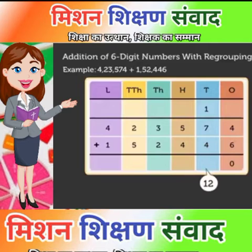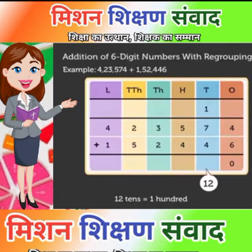Then we add the tens place: seven plus four plus one carried over equals twelve. Twelve tens equals one hundred plus two tens. We carry one forward to the hundreds place and write two at the tens place.